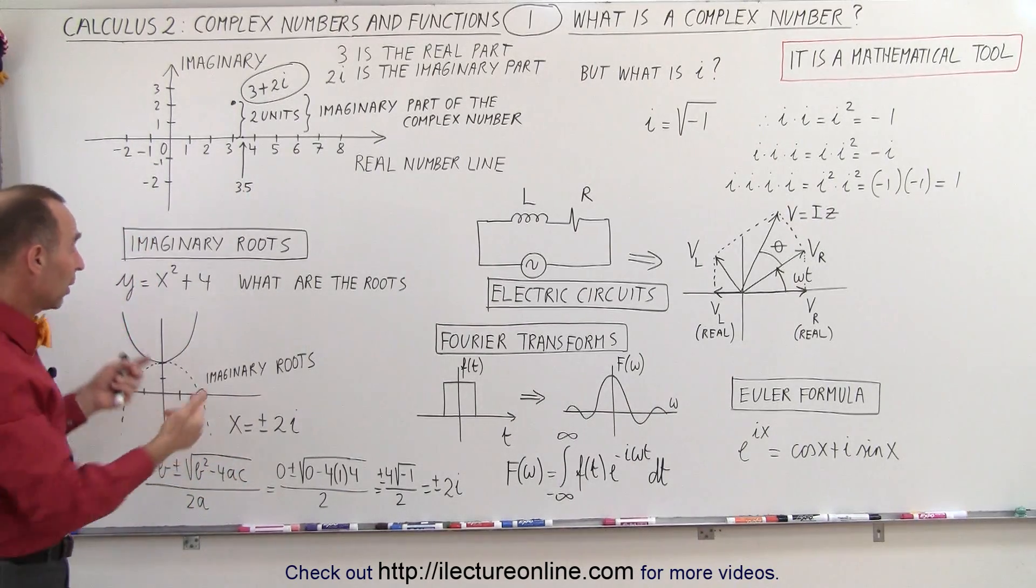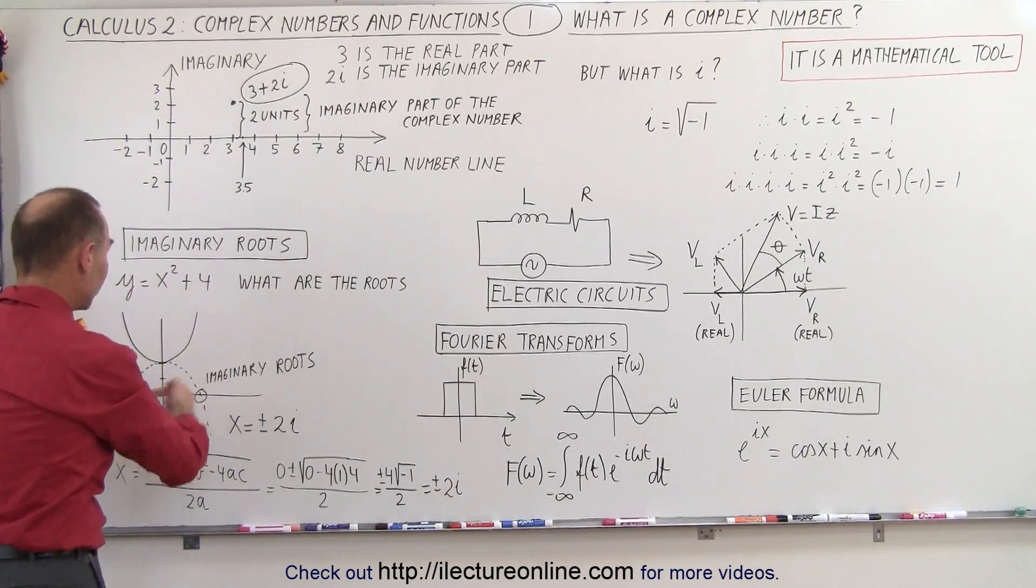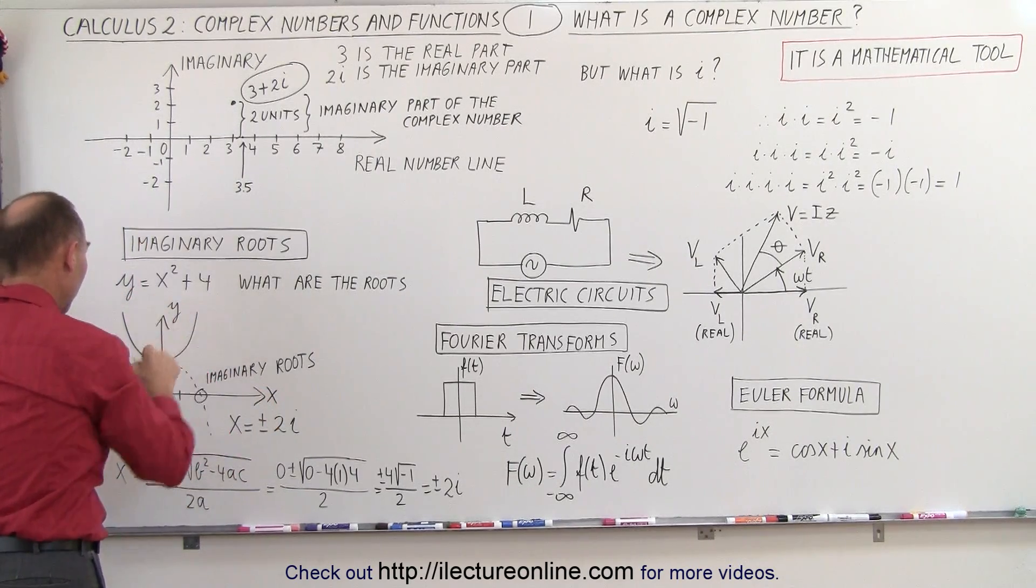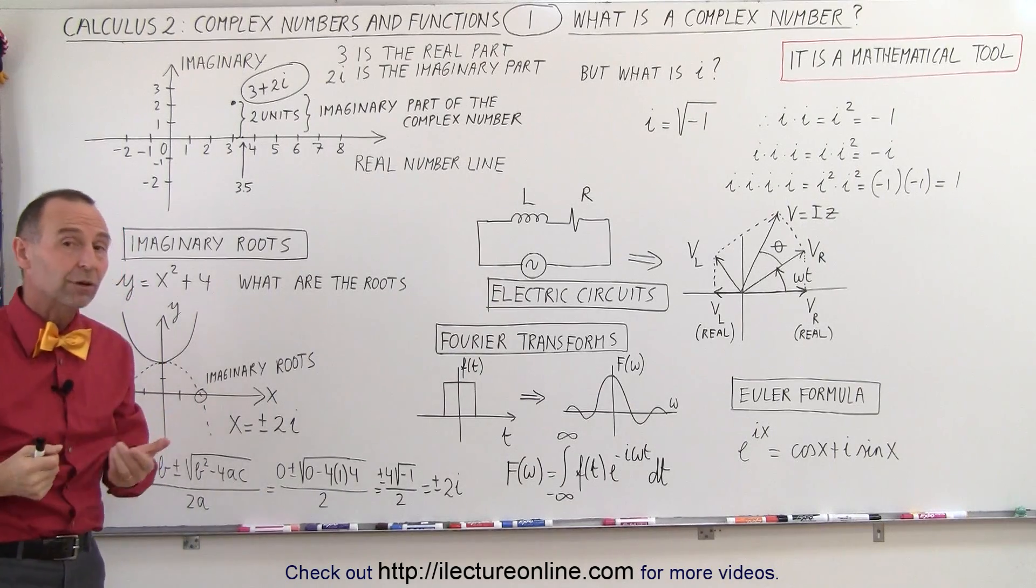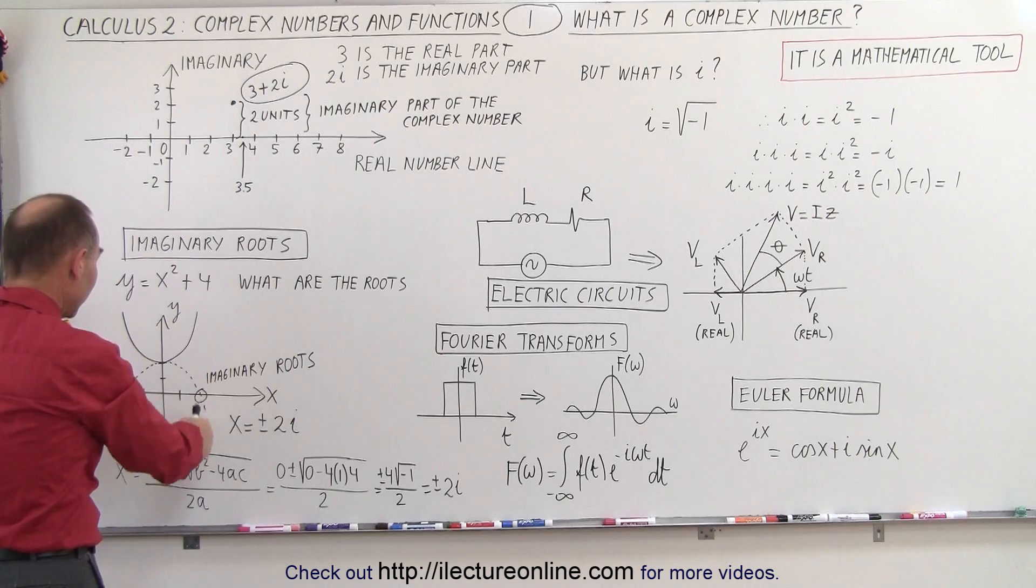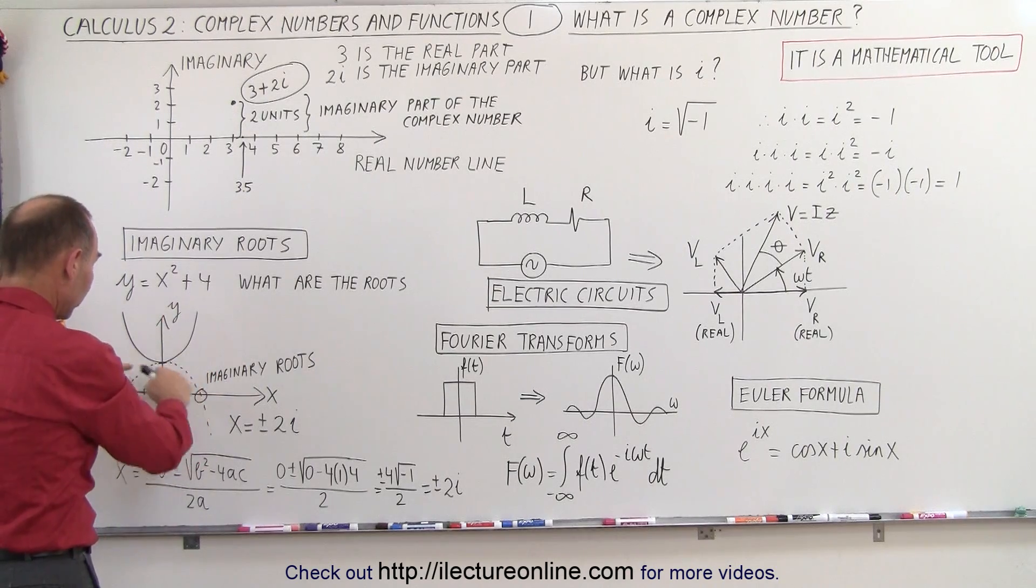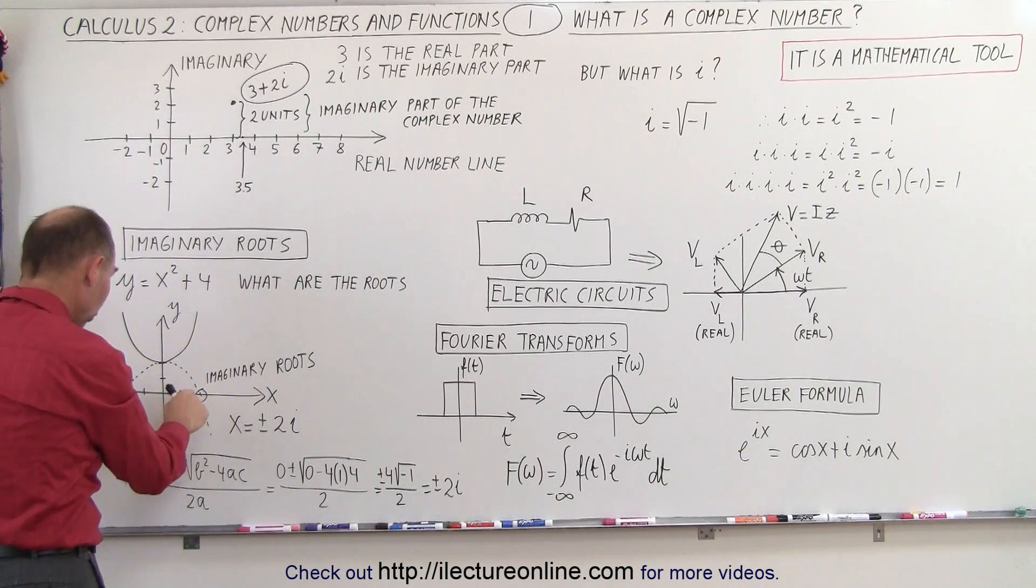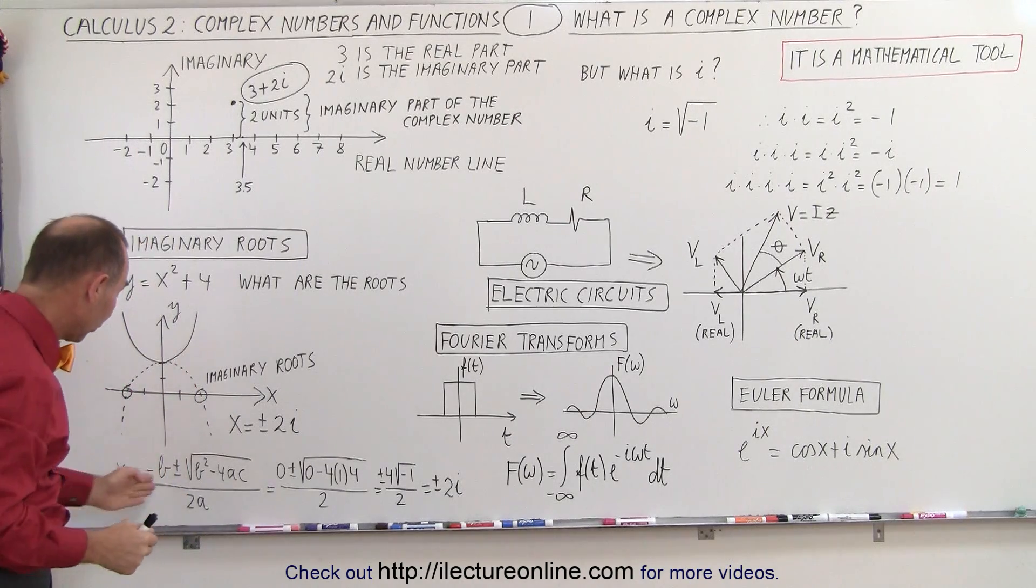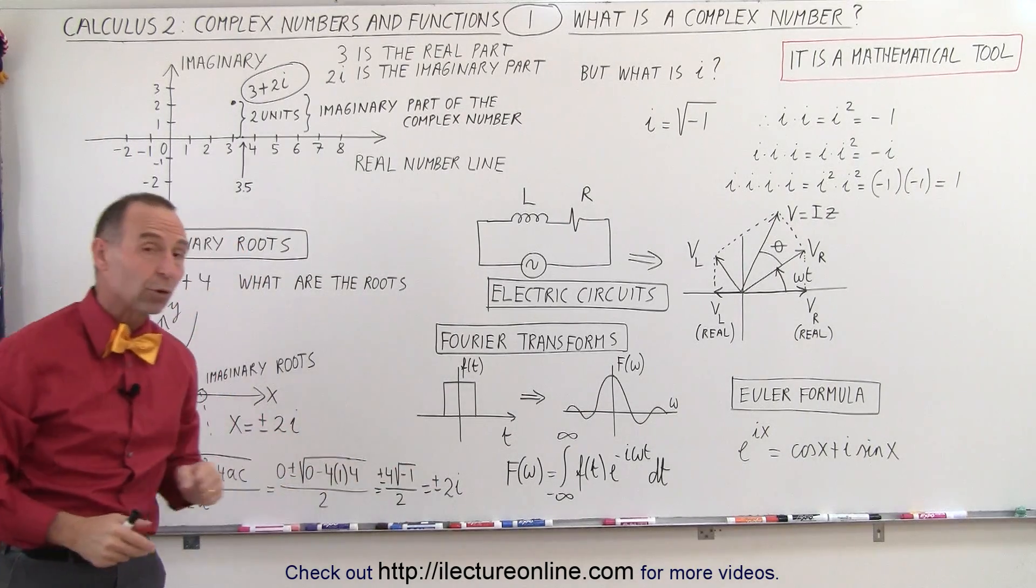your first inclination would be, well, it doesn't have any roots because the graph doesn't cross the x-axis. So this is our x-axis here, and there's our y-axis there, but it does have imaginary roots. If we flip over the parabola, then we can see that that image, when we flip it over, does cross the x-axis, and those are then the two imaginary roots. And using the quadratic formula, we can indeed find what those roots are.